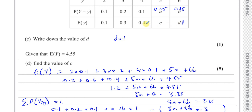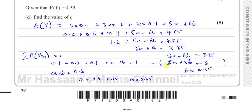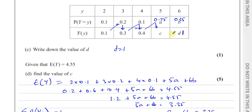Now filling in: A = 0.25 and B = 0.35. For the cumulative distribution, C is found by adding the probabilities up to score 4: 0.1 + 0.2 + 0.1 + 0.25 = 0.65. We can verify: 0.65 + 0.35 = 1. So C = 0.65.